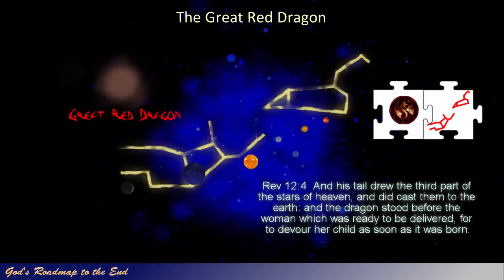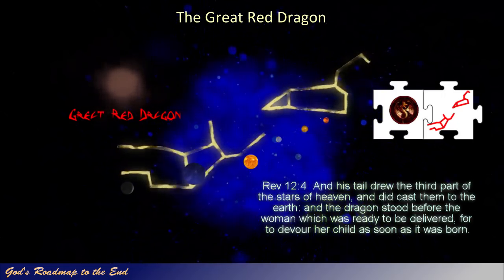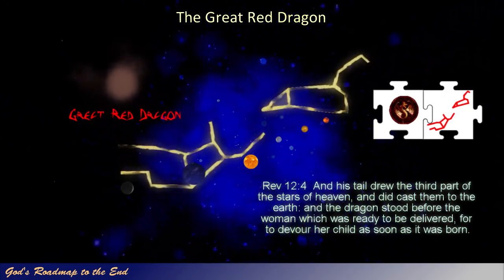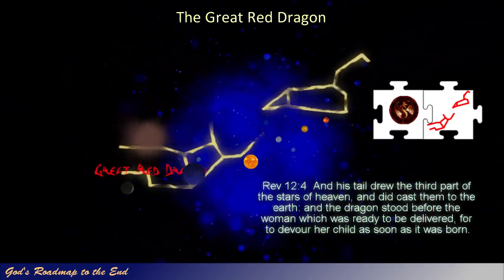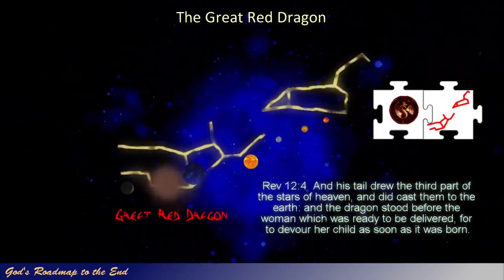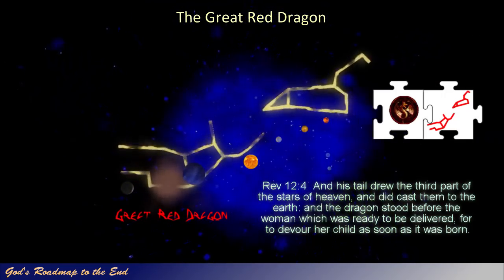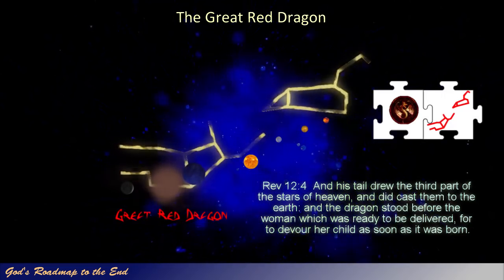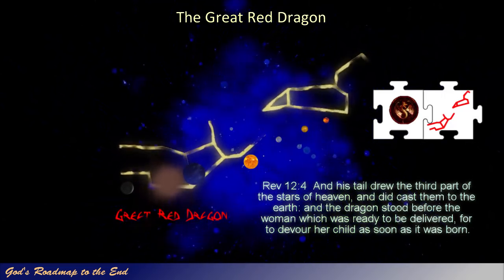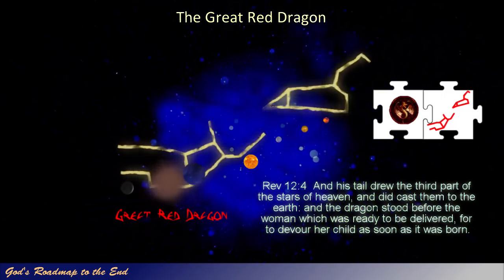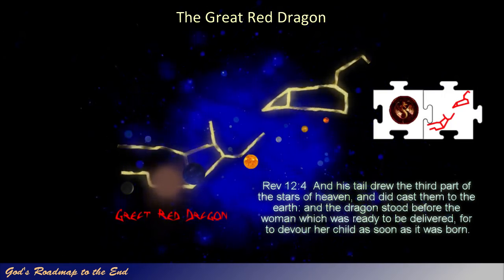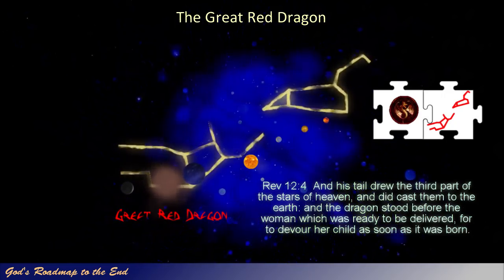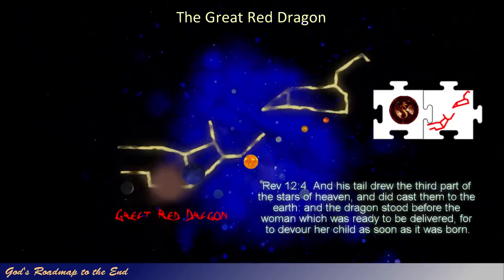Revelation 12 verse 4: 'And his tail drew the third part of the stars of heaven, and did cast them to the earth. And the dragon stood before the woman which was ready to be delivered, for to devour her child as soon as it was born.' When we consider the implications of the first section of this passage, keeping in mind the celestial application, it is clear that this unknown celestial entity will at some point encounter a substantial amount of debris that will be pulled into its gravitational field on its way to the center of the solar system.